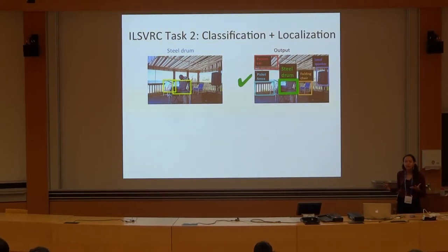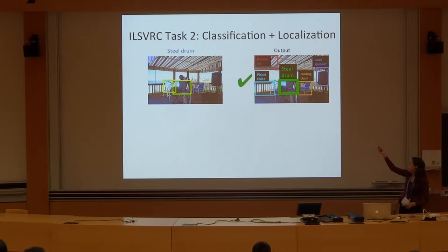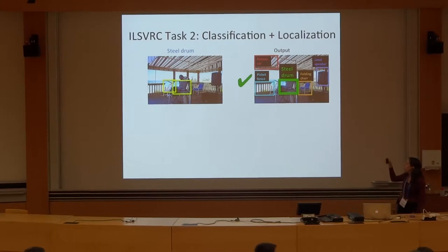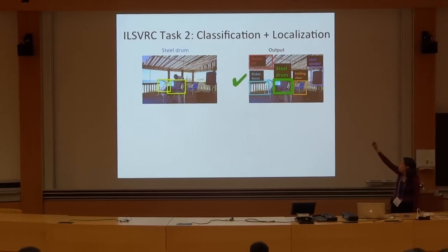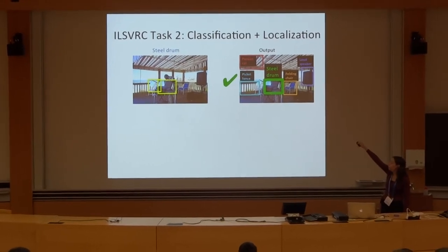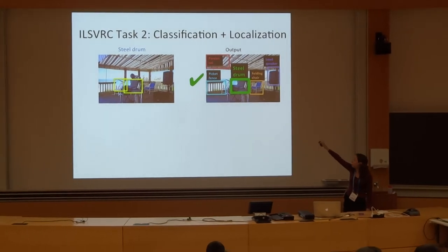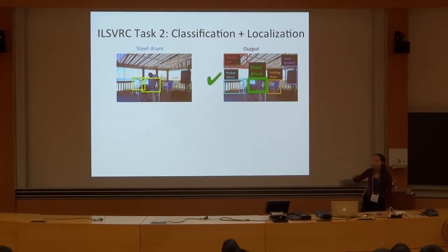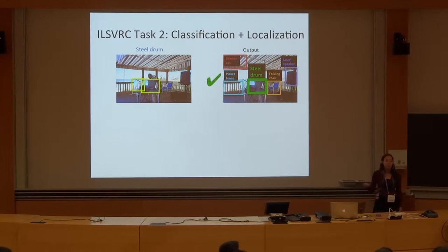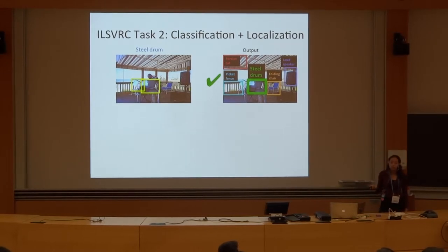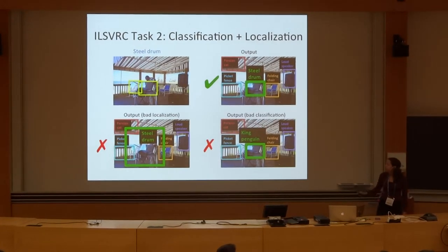It's up to five class labels, each one with one bounding box. So for example, over here, the algorithm produces five different class labels with bounding boxes. Some of them are correct, some of them are wrong. But 'field drunk,' which is the target category, is correct. The class label is correct, and one of the bounding boxes is directly localized. So this is correct.